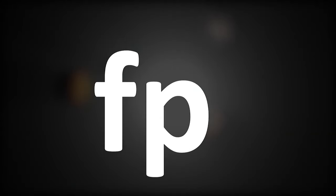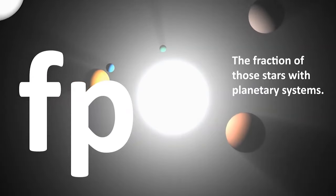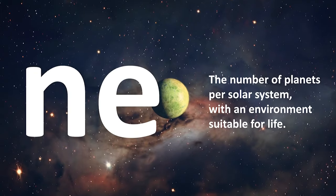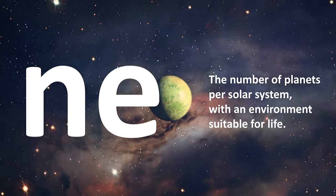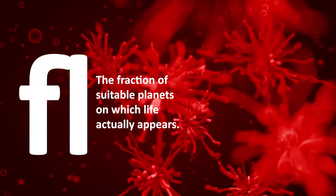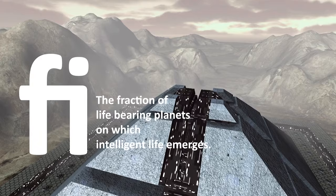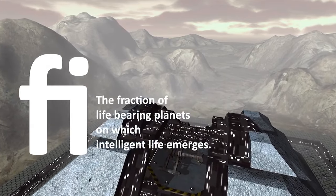f sub p, the fraction of those stars with planetary systems; n sub e, the number of planets per solar system with an environment suitable for life; f sub l, the fraction of suitable planets on which life actually appears.